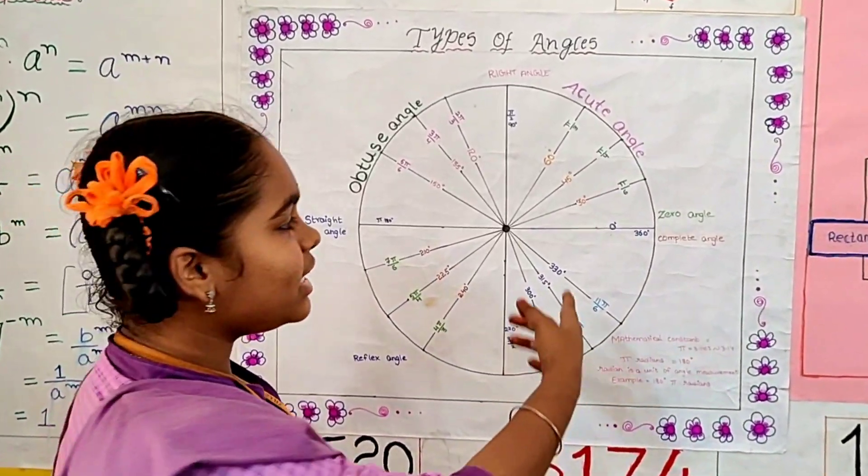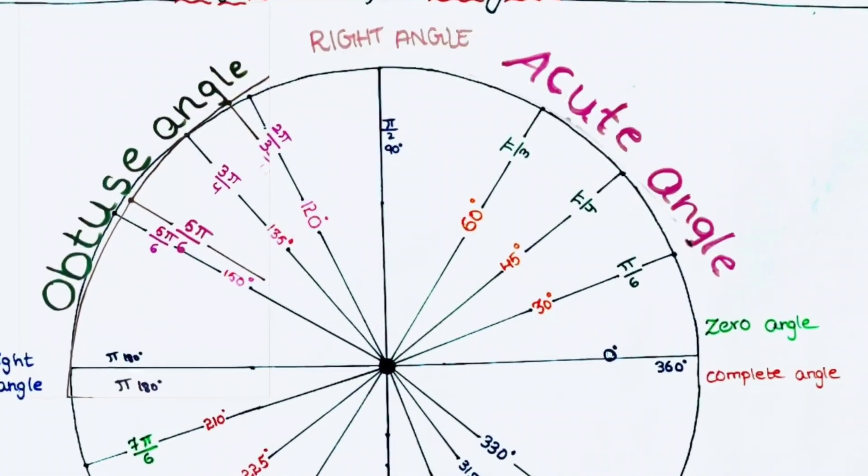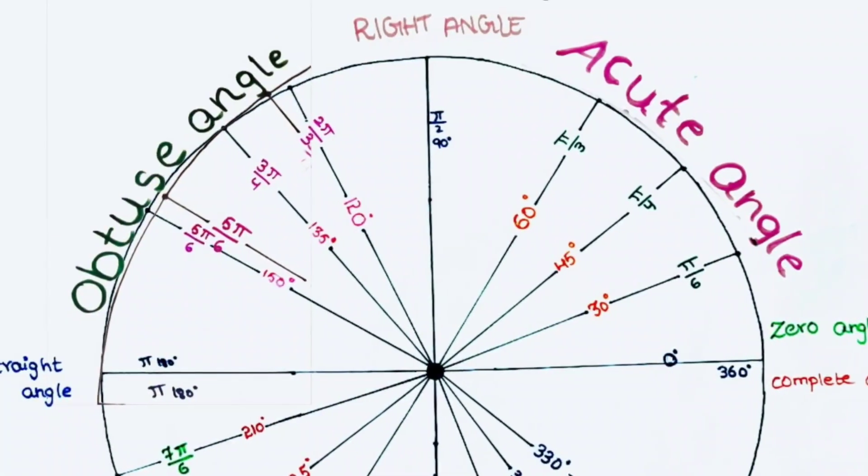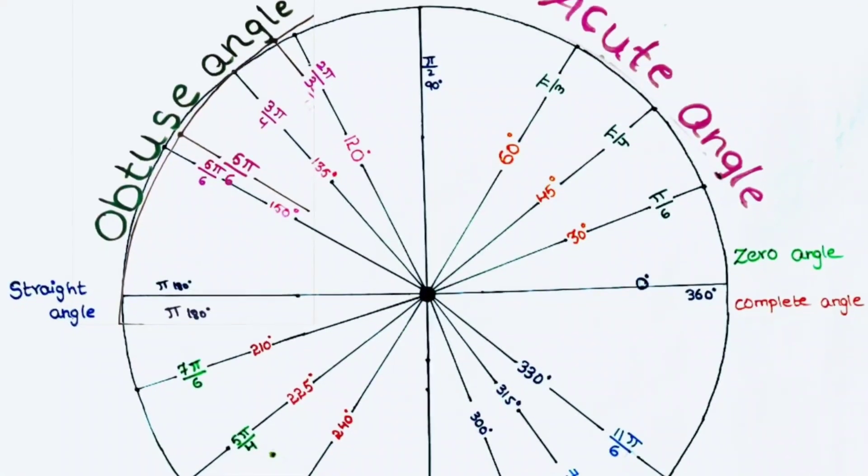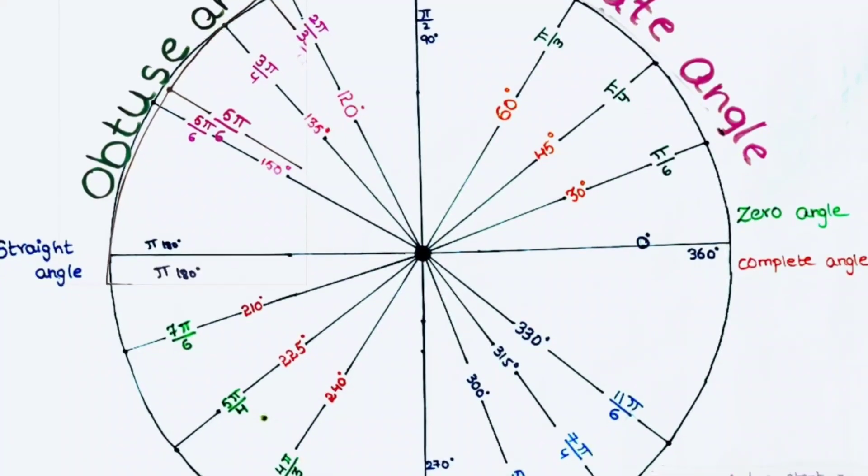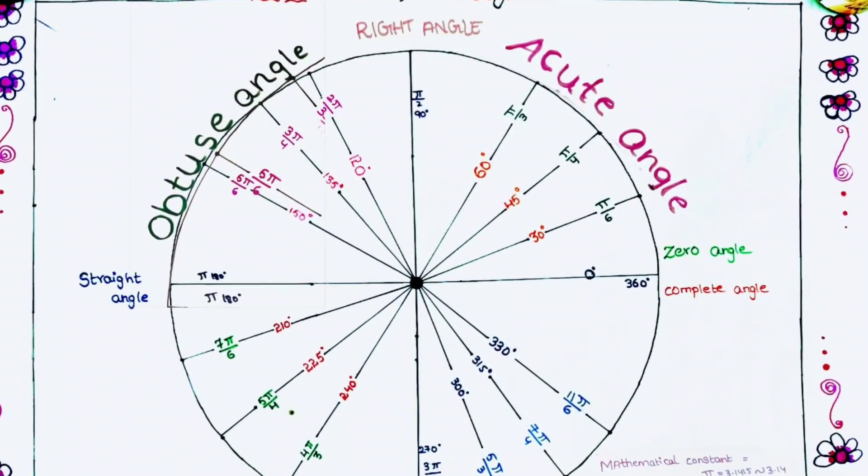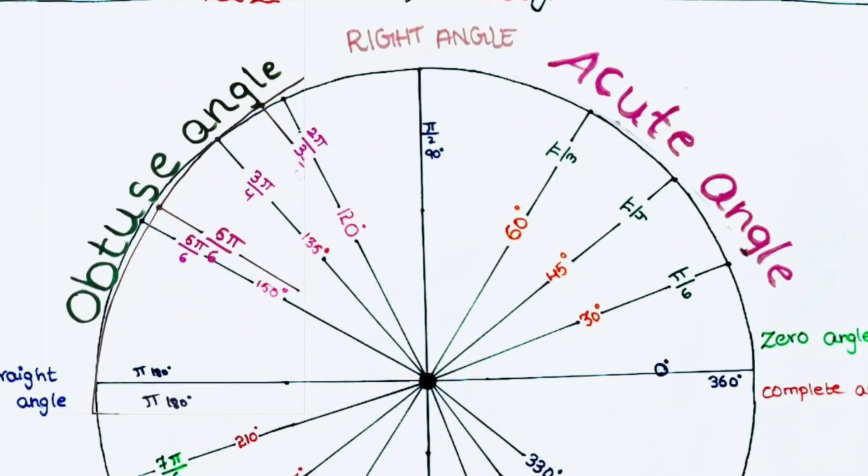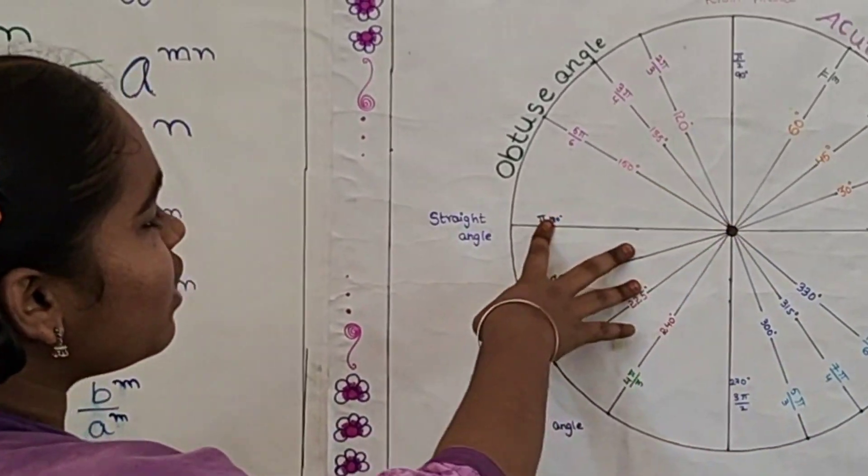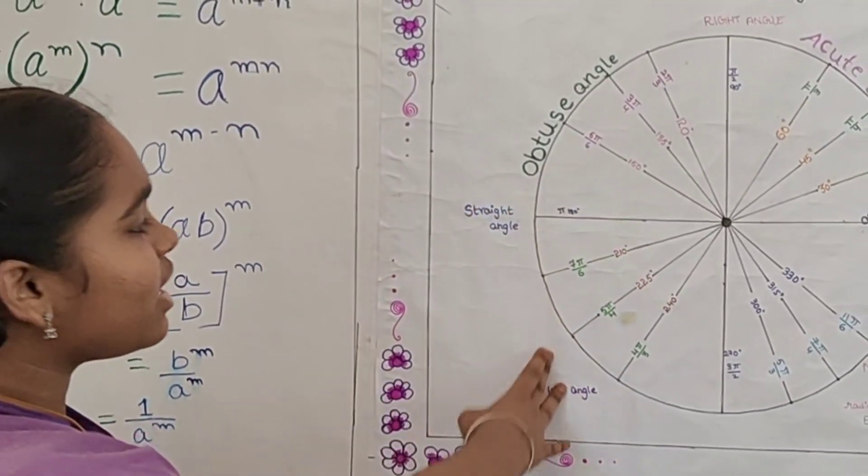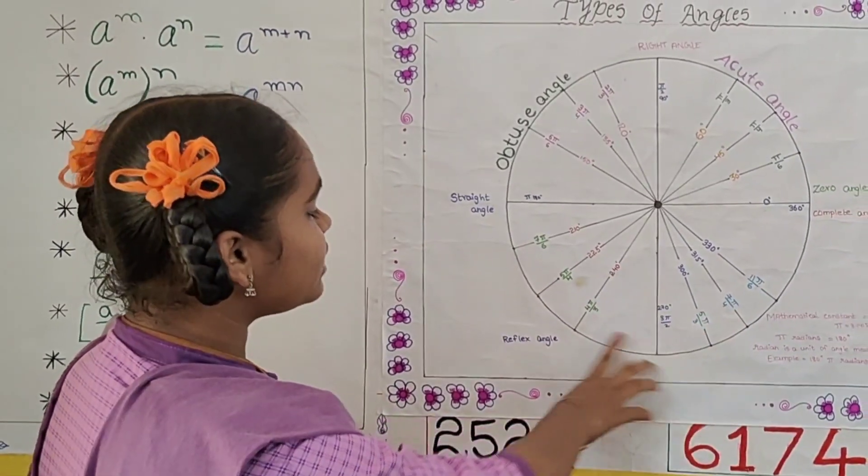If the angle is 0 degrees, then it is zero angle. If the angle is 90 degrees, then it is right angle. If the angle is 180 degrees, then it is straight angle. If the angle is 360 degrees, then it is complete angle. If the angle is between 0 to 90 degrees, then it is acute angle. If the angle is between 90 to 180 degrees, then it is obtuse angle. If the angle is between 180 to 360 degrees, then it is reflex angle.